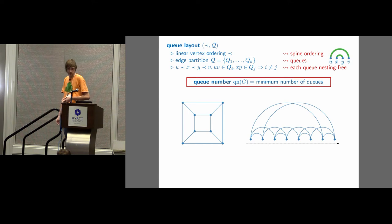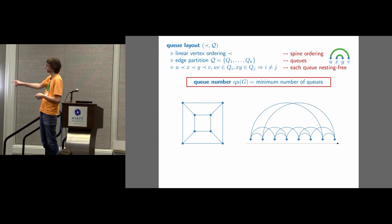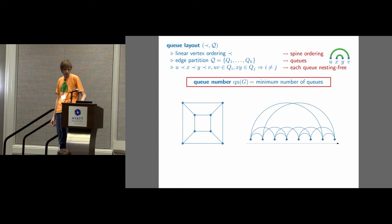So this is an attempt for the left graph to find such a Q layout. The question is, this is a vertex ordering, we always read it left to right, can I put all the edges in one Q? Well no, I can't because there is this forbidden thing. So I'm gonna need at least two Qs if I take this vertex ordering.